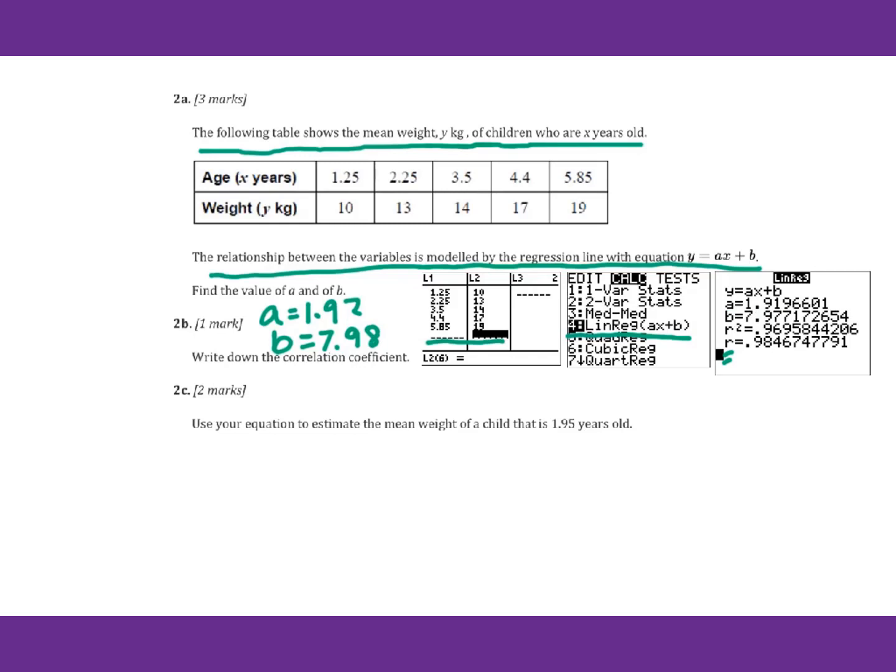For problem 2b, write down the correlation coefficient. R equals 0.985. Use the equation to estimate the mean weight of a child that is 1.95 years old. So y equals 1.92 times 1.95 plus 7.98.